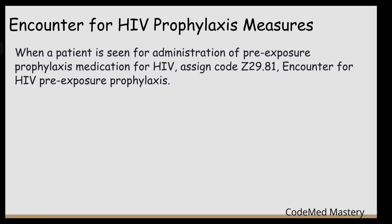The next guideline covers encounters for HIV prophylaxis measures. When a patient is seen for administration of pre-exposure prophylaxis medication for HIV, we assign code Z29.81 — encounter for HIV pre-exposure prophylaxis. Prophylaxis refers to an action taken to prevent disease.